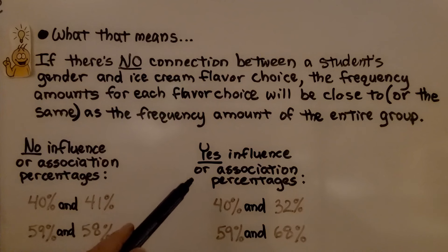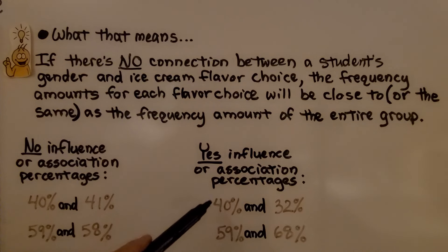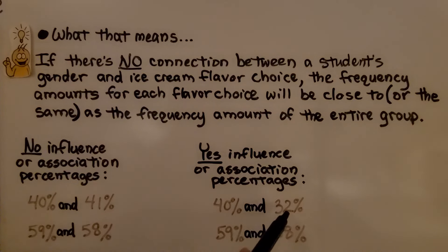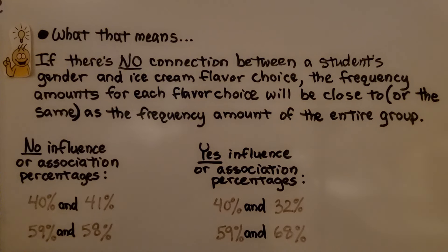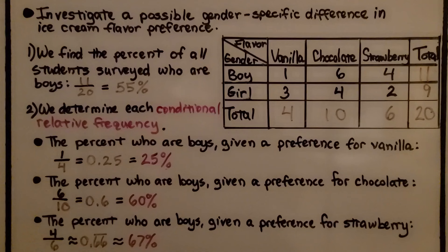If there is an influence or association, the percentages would be like 40% and 32% — see how different they are — or 59% and 68%, or 12% and 90%. So in this problem, it's telling us to investigate a possible gender-specific difference in ice cream flavor preference.